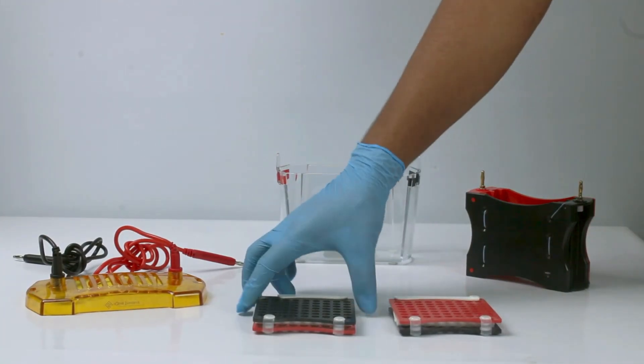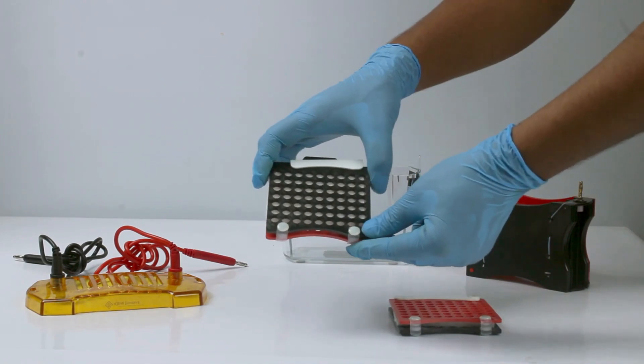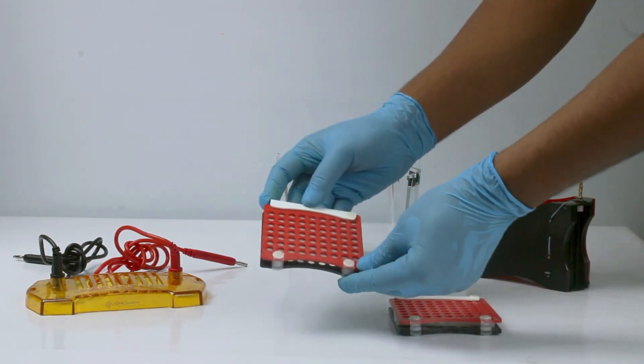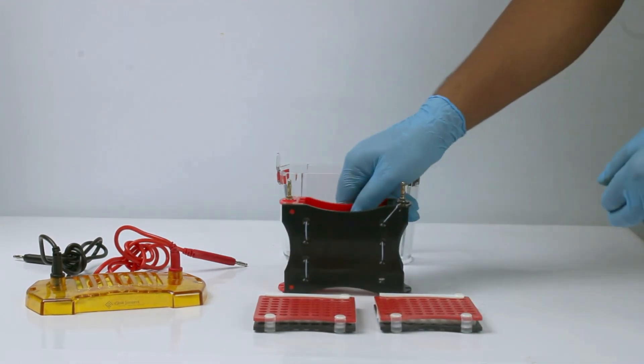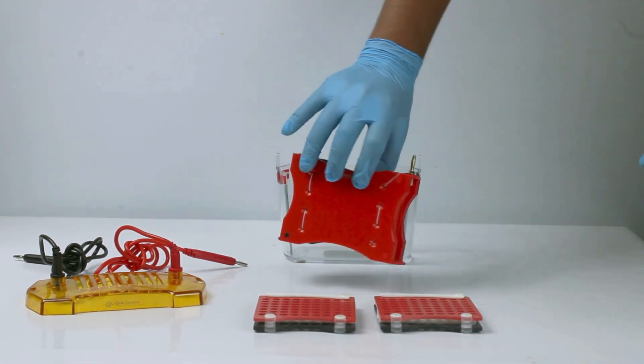Let us move to the western blot procedure. Use the transfer clip with color-coded marking. Black indicates negative side, red indicates positive side. This is our transfer blot with color coding.